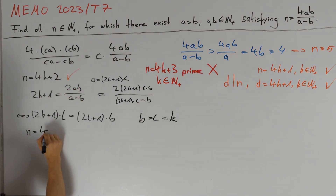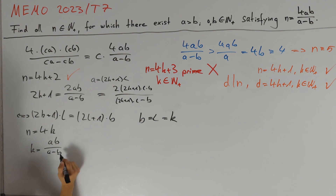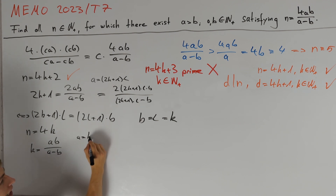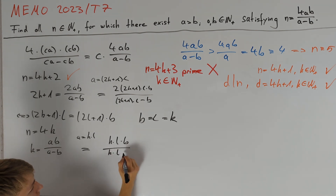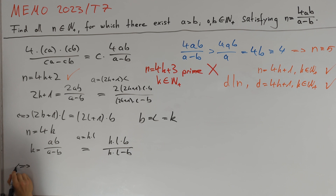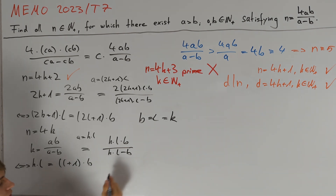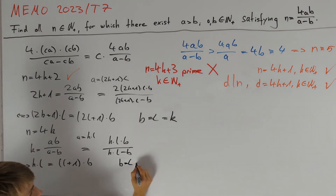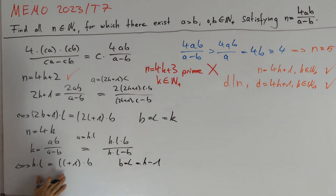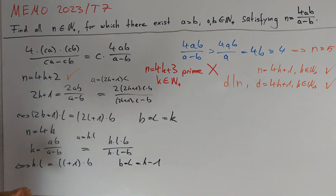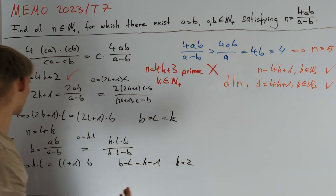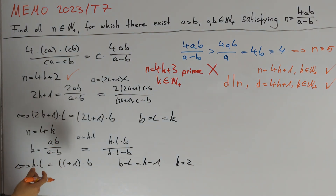Our last case is n equals 4k, where the equation becomes k equals ab divided by a minus b. Taking a equals k times l gives k times l times b divided by kl minus b. Rearranging gives kl equals (l plus 1) times b. We take b equal to l equal to k minus 1 to satisfy this equation. We must ensure k minus 1 is a positive integer, so this works for all k greater than or equal to 2, covering every n equal to 4k with n greater than or equal to 8, but together with earlier cases we cover n greater than or equal to 5.